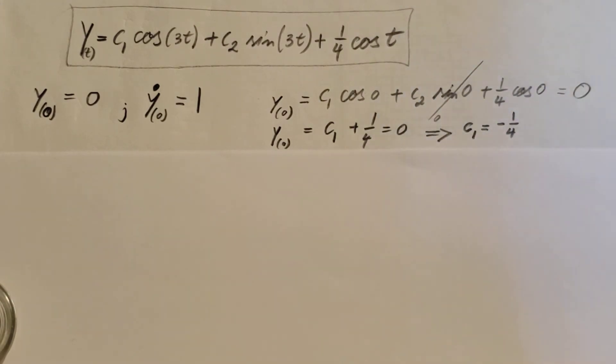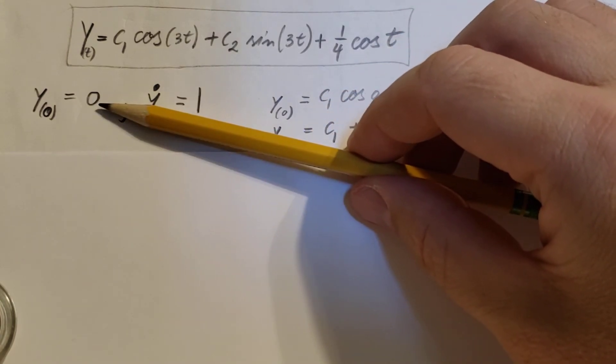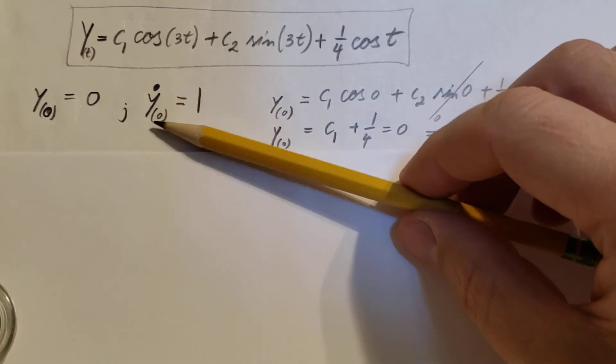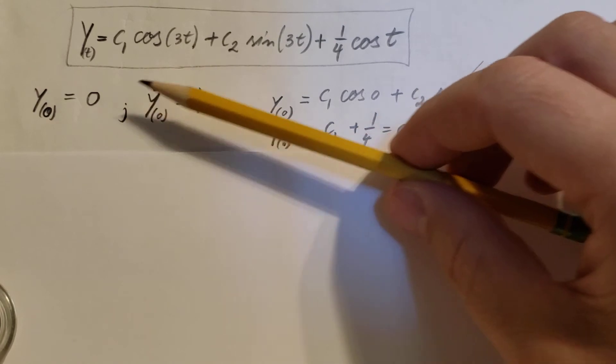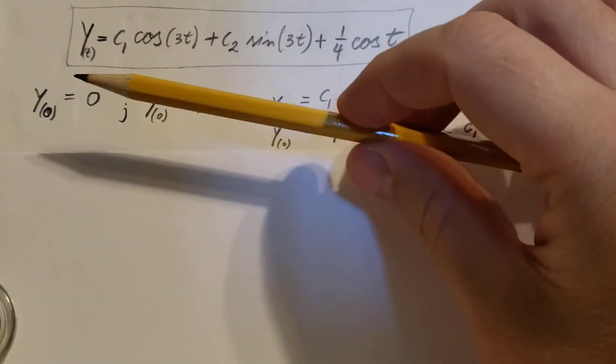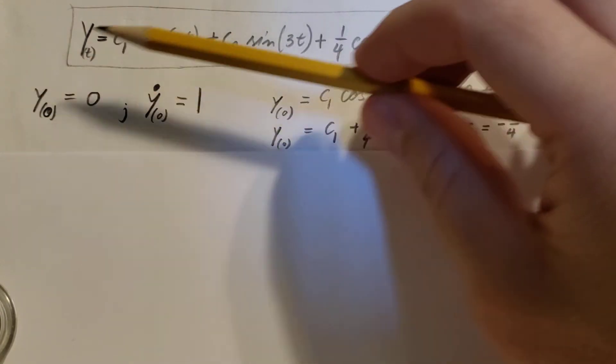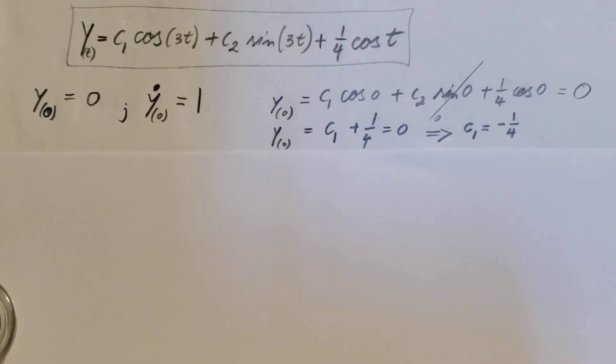This was our answer, problem over. But I want to take another step and see what happens if this was involved in an IVP, initial value problem. If we had y(0) equals zero given and y prime(0) equals one given, these two would be given as an IVP.